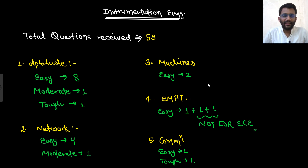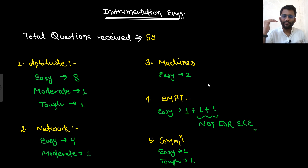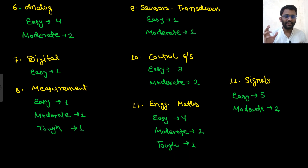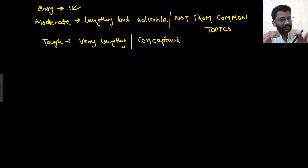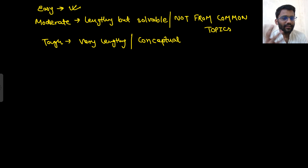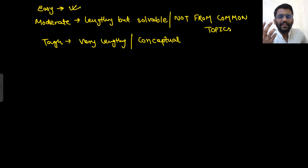Hi everyone, I am done with the analysis of the instrumentation engineering question paper. I have received nearly around 53 questions, and based on that I have made this analysis — from which subject, how many questions were easy, moderate, and tough. Easy are the ones which can be solved by anyone who has just studied the subject. Moderate are those which are lengthy but solvable if approached with a cool mind.